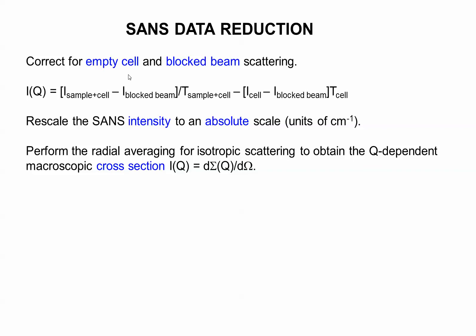Data reduction. All of this is under the hood. You don't have to worry about what our software is doing, but just to give you a feel for it. We subtract the empty cell and the blocked beam. The blocked beam, we stop the neutrons. We measure background due to electronic noise and so on. We rescale the intensity to an absolute scale, per centimeter inverse.